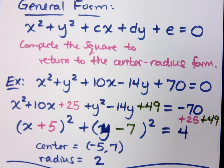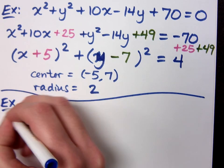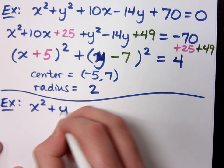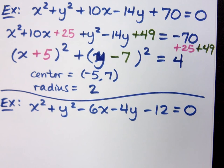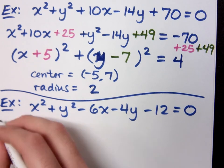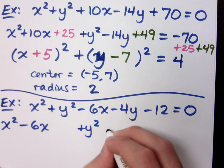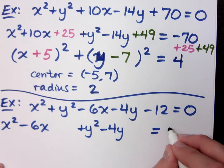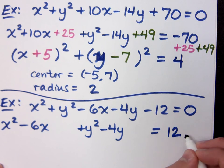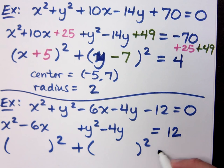Before I go ahead and graph this, I want you to do another example, and then I'm going to graph both of these together — I want you to have both on the same page and the same video. I'm going to take x squared plus y squared minus 6x minus 4y minus 12 equals 0. What am I going to do here? How do I rearrange this? We expect each group to factor as a perfect square, and we'll figure out what that number is in a second.